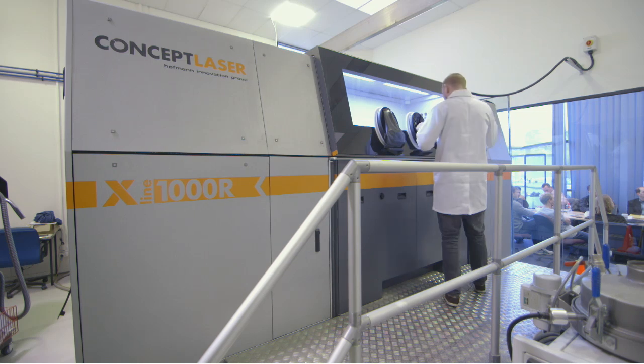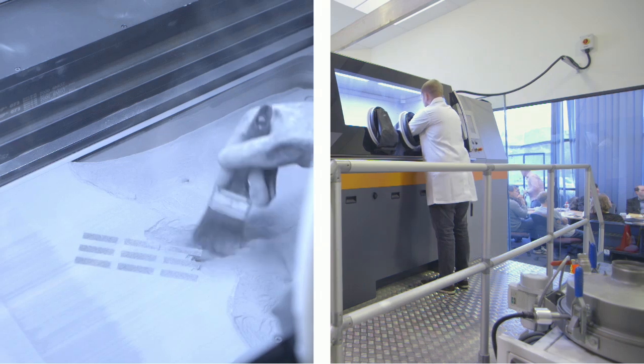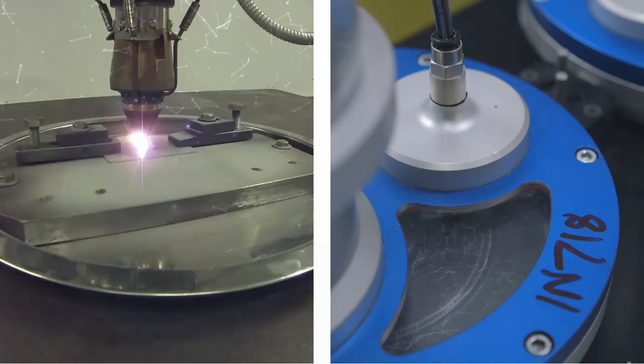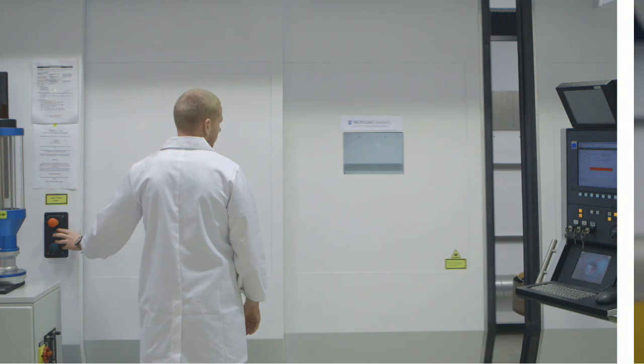The Monash Centre for Additive Manufacturing is a world-class facility for additive manufacturing, also called 3D printing. This is because we have the best facilities in the world, but we also have more than 10 years' experience in this field with large capability in terms of research and application.